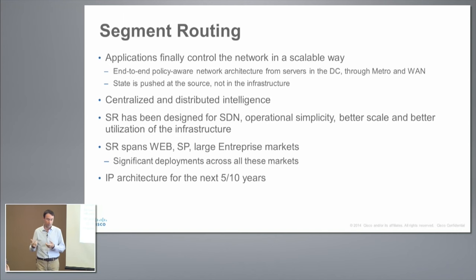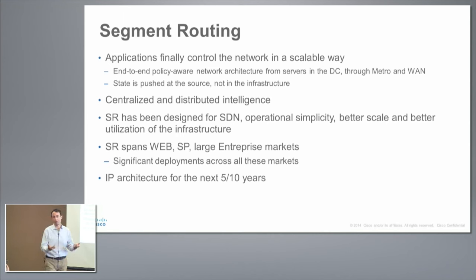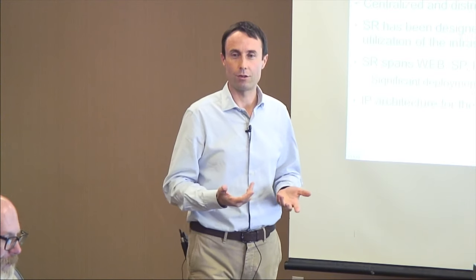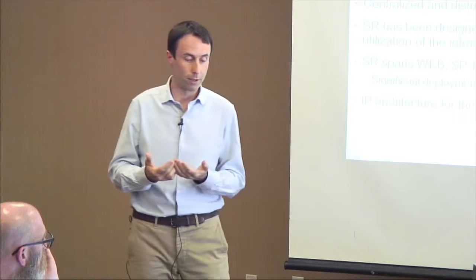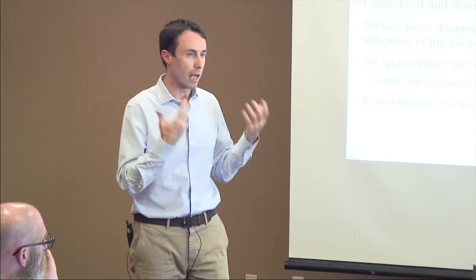Better scale is obvious from the MPLS control plane issues, and better utilization of infrastructure is also a key goal. RSVP-TE is mature and some have deployed it, but it represents only about two percent of the overall service provider market and zero percent of the large enterprise market. So yes, there was a solution for better infrastructure utilization, but not for most operators. These were the key targets for segment routing. We built the architecture working very closely with operators across the hyperscale web space, large and small service providers, and large enterprises, and we now have significant deployments across all these markets.